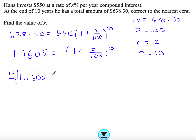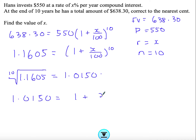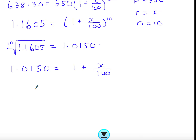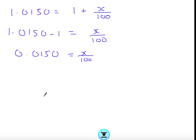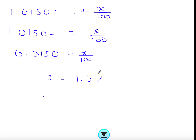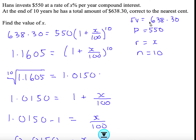After taking the root, we have 1.0150. Subtract 1 to get 0.0150, then multiply by 100 to get the percentage: x = 1.5%. You can check your answer by substituting back into the formula to verify you get the same future value. If the power (n) were missing, you'd need logarithms — that's not required for the standard IGCSE 0580 curriculum, so it's not something to worry about here.